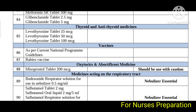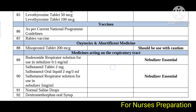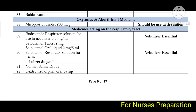Oxytocin and abortifacient medicines include misoprostol. Medicines acting on the respiratory tract include budesonide respirator solution for nebulizer, salbutamol tablets and respirator solution for nebulizer, and normal saline drops.